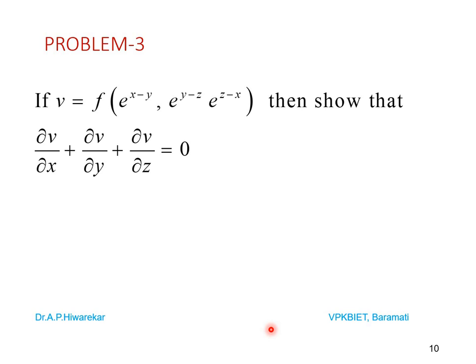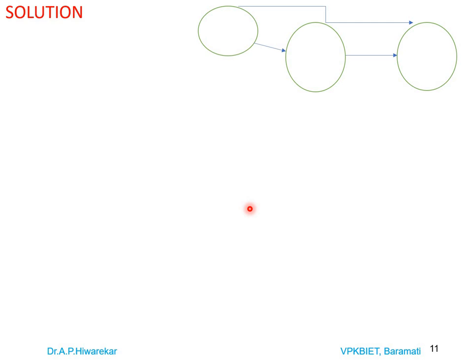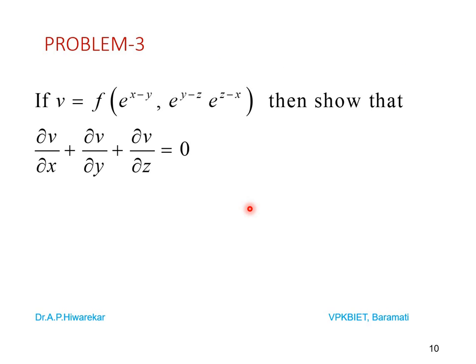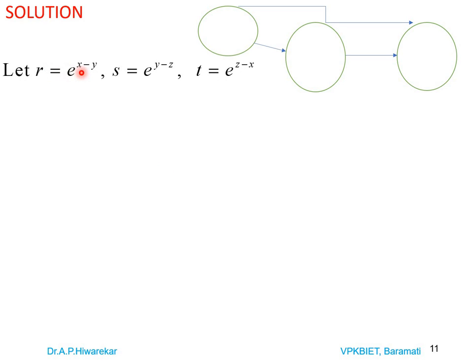Problem number 3: if v = f(e^(x-y), e^(y-z), e^(z-x)), show that ∂v/∂x + ∂v/∂y + ∂v/∂z = 0. To prove this, let r = e^(x-y), s = e^(y-z), t = e^(z-x). These are functions of x, y, z, and v is a composite function of x, y, z through r, s, t.